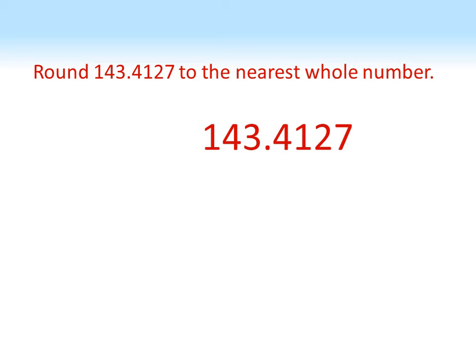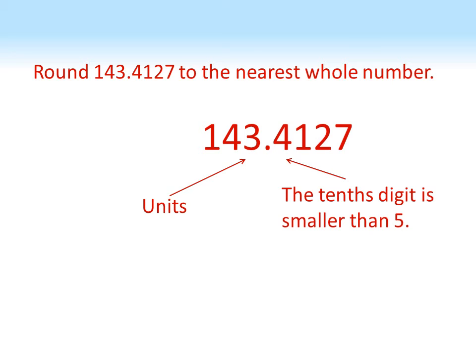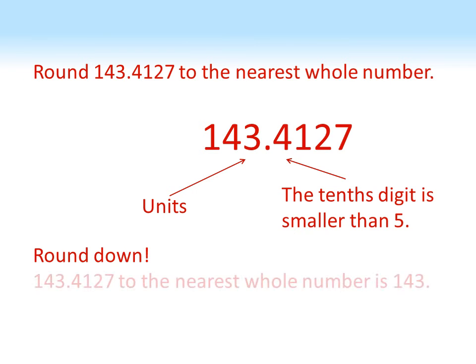Now we've got a longer decimal: 143.4127. Again, we just need to consider the units digit — there's a 3 — and the tenths digit, which is a 4. So this time the tenths digit is smaller than 5, so we round down and our units stay the same: 143.